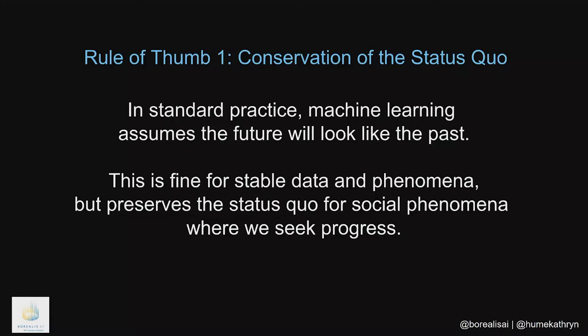The first rule of thumb: let's call it the conservation of the status quo. When machine learning developers and scientists come in, their basic modus operandi is to assume that the future will look like the past, which means they can take all this past data and use it to make predictions about future events. That's fine for predicting whether the earth will revolve around the sun, but it gets dicey for social phenomena where we actually want the future to look different than the past.